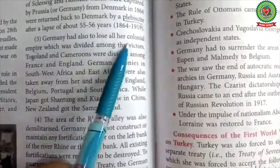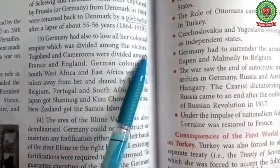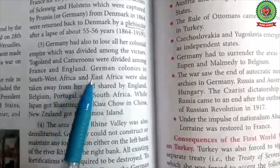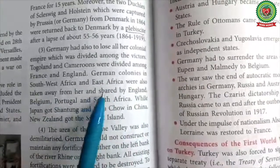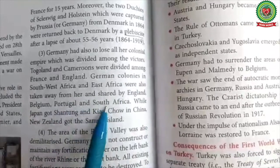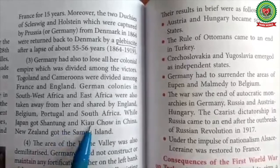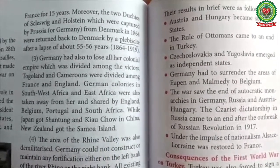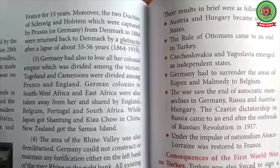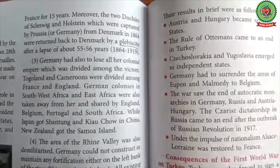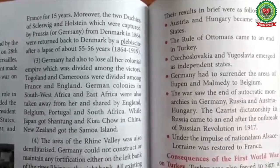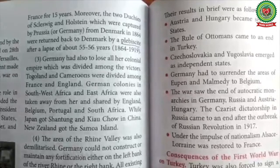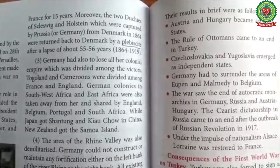Germany's overseas empire was taken away to become mandates controlled by the League of Nations, which effectively meant Britain and France controlled them. Togoland and Cameroons were divided among France and England. German colonies in South West Africa and East Africa were taken away and shared by England, Belgium, Portugal, and South Africa, while Japan got Shantung and Kiaochow in China, and New Zealand got the Samoa Island.